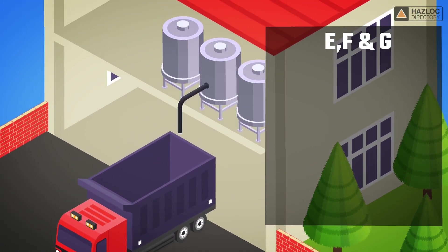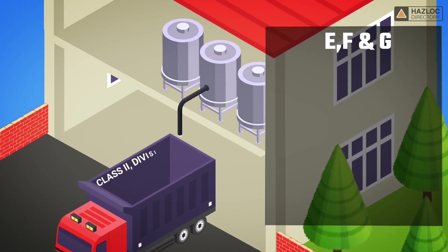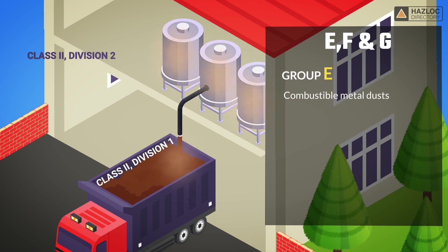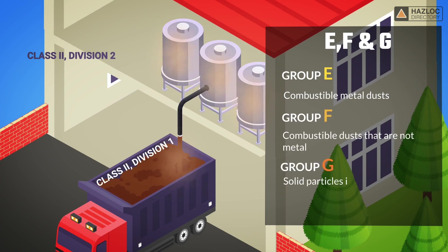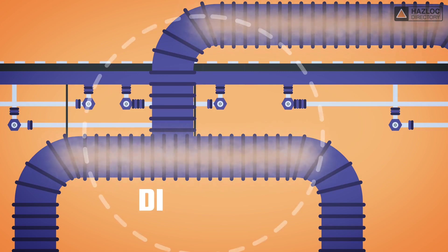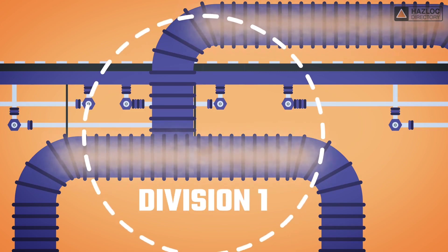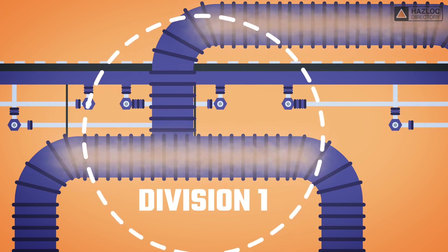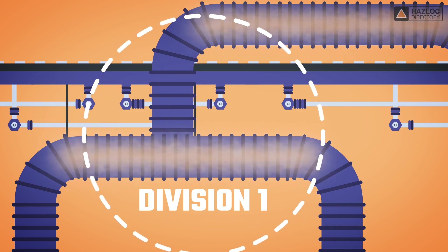The three dust groups E, F, and G in North America further define dusts as follows. Group E: combustible metal dusts. Group F: combustible dusts that are not metal. And Group G: solid particles including fibers. If there is conductive metal dust in the area, then the entire area where the dust may collect is considered to be division 1.